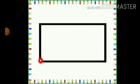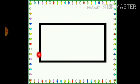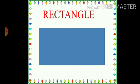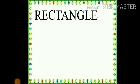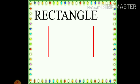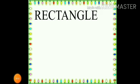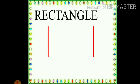So, in a rectangle, there are how many sides, children? Yes, there are 4 sides in a rectangle. And how many corners? 4 corners. If you look at this shape properly, you will see that in a rectangle, the 4 sides are not the same — they are not the same length. In a rectangle, there are 2 sides which are short and 2 sides which are long. The 4 sides are not same; the opposite sides are same.